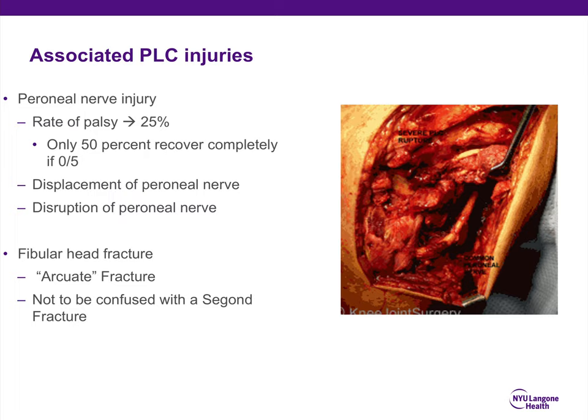In terms of associated posterolateral corner injuries, peroneal nerve injury rate is very high — up to 25% to 30%. Patients with distal injuries have a higher rate of peroneal palsy, anywhere from 40% to 60%. If the patient has a complete palsy of the peroneal nerve — 0 out of 5 strength — only 50% of those patients will recover function. It's very important to have this conversation with the patient and their family prior to any reconstruction, because outcomes are not particularly good.